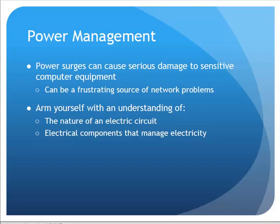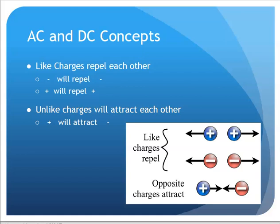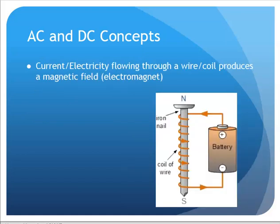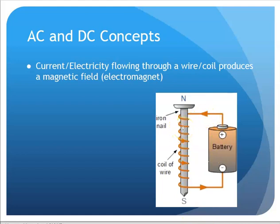A little bit of background on AC/DC — hopefully you remember some of these concepts from general science. Like charges repel each other: negative repels negative, positive repels positive. But unlike charges will attract each other — positive and negative will attract. Another principle: as I move electrical current through a wire, like through a battery to a wire with a nail, that's going to produce a magnetic field. The nail concentrates that field, making a little electromagnet to pick up paper clips.